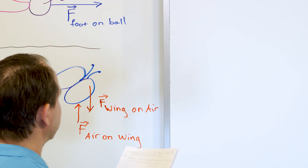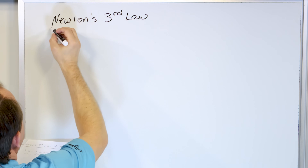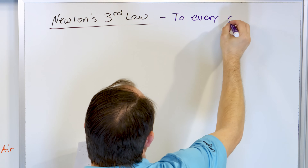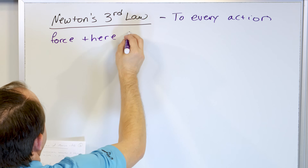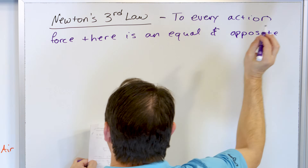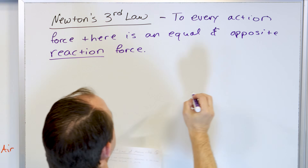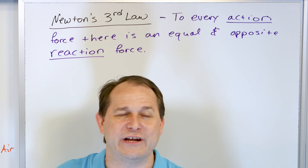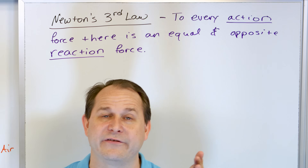Now let's write down Newton's third law on the board. Newton's third law: to every action - and when I say action, it's really an action force - there is an equal and opposite reaction force. I would add: these forces act on different objects or on the partner object in the interaction. Because it sounds like there are always two forces that just cancel - equal and opposite cancel - but that's not what's happening because the forces are acting on totally different things.